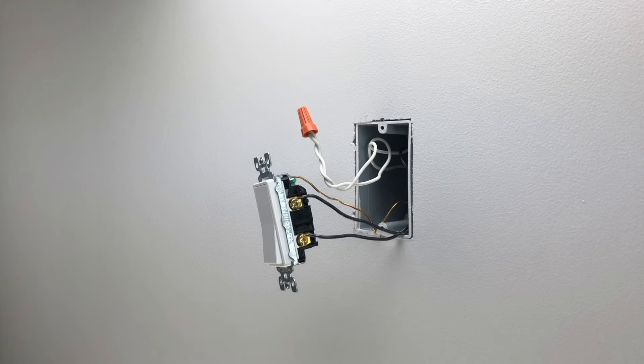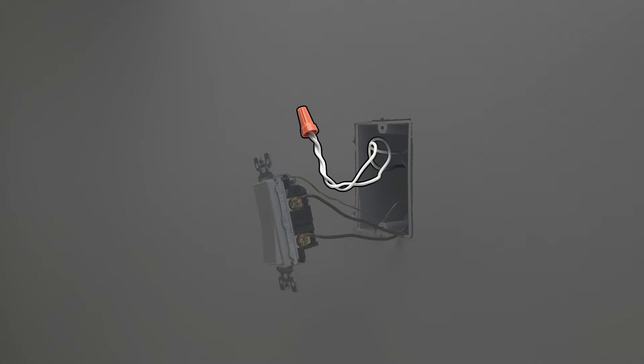Make sure you have a neutral wire junction in the gang box. This is typically a bundle of white wires grouped together. If your gang box doesn't contain a neutral wire, Instinct is not compatible at this gang box location.